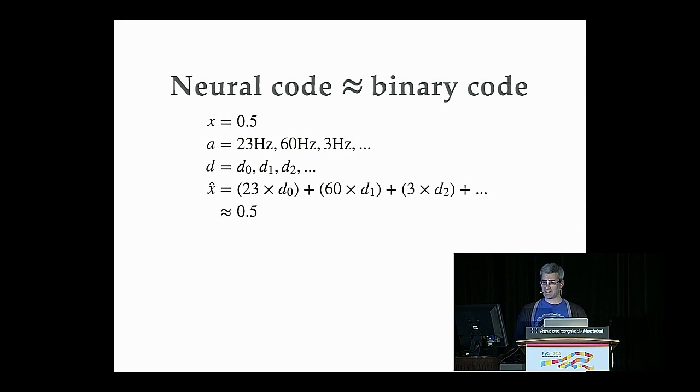The neural code, analogously, if we're trying to encode a number, like 0.5, this might represent kind of medium pressure on your finger. The neurons that are sensitive to that quantity are going to spike at a certain rate. So say we have a neuron that's spiking at 23 Hz, 60 Hz, 3 Hz. Nengo will figure out a set of decoding weights, D, associated with these neurons, such that we can do the same weighted sum to get back an estimate of that originally encoded value.